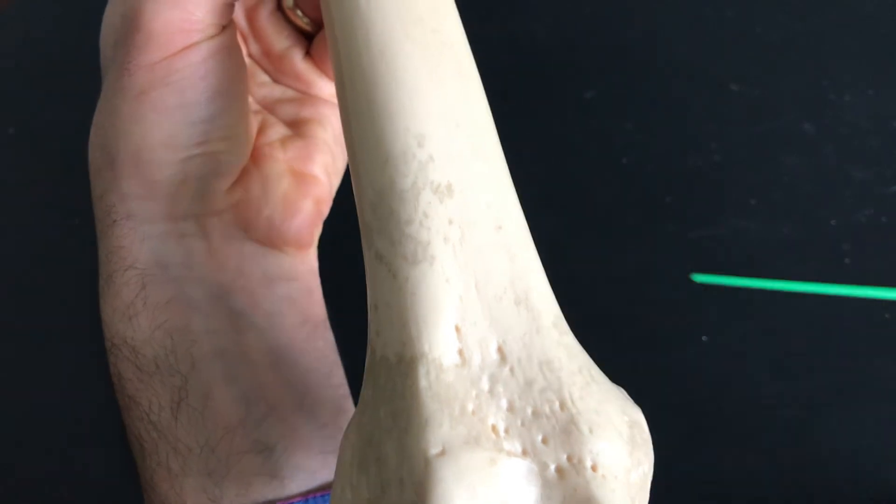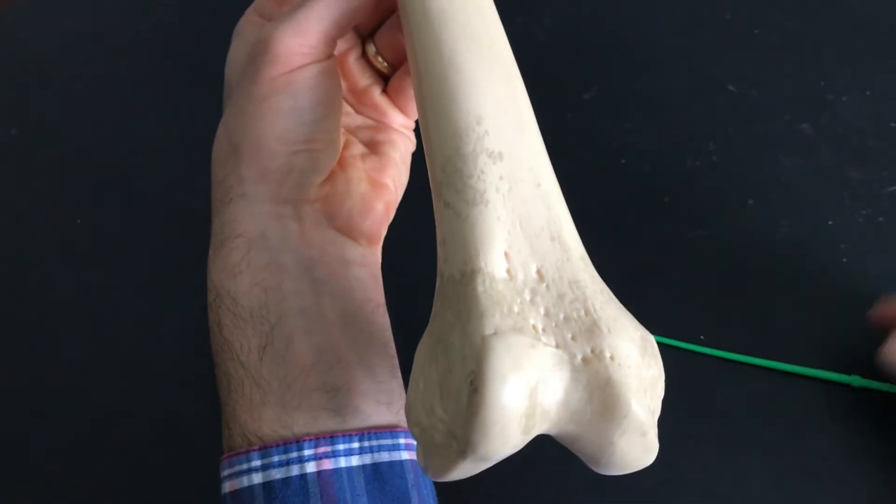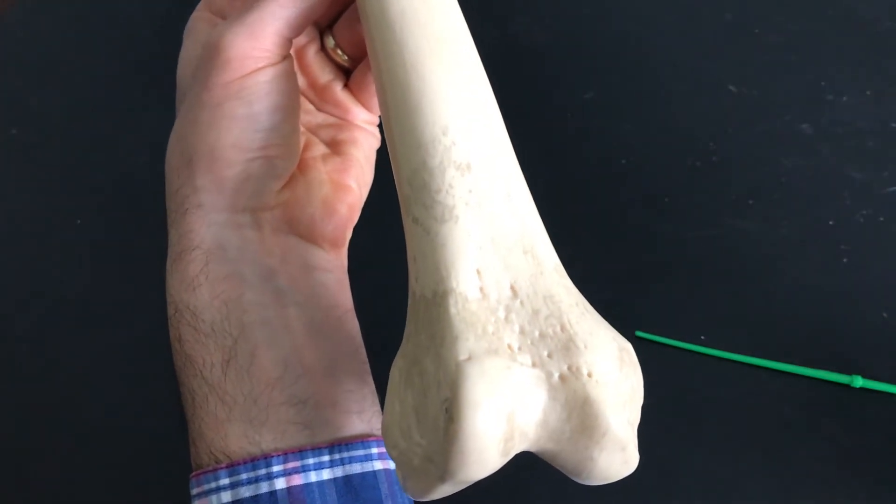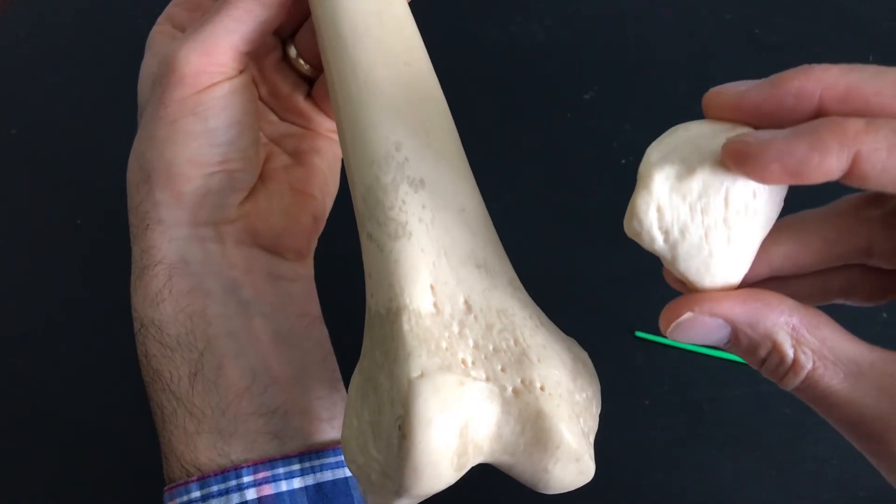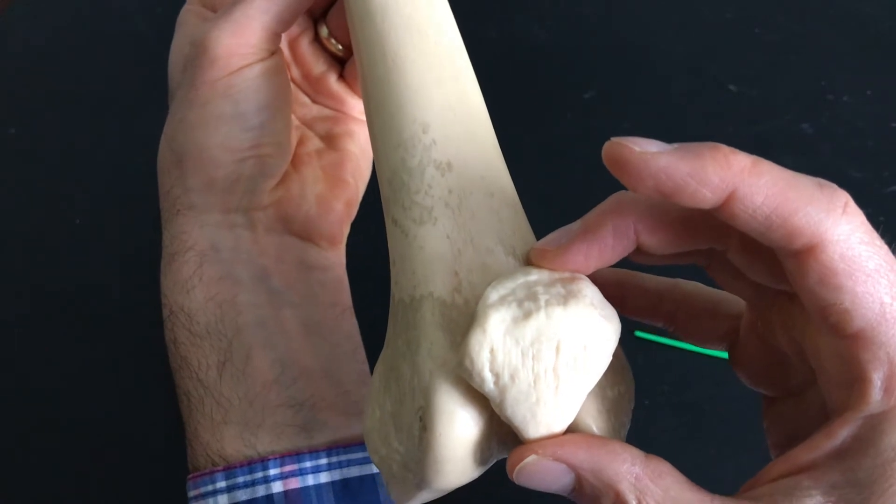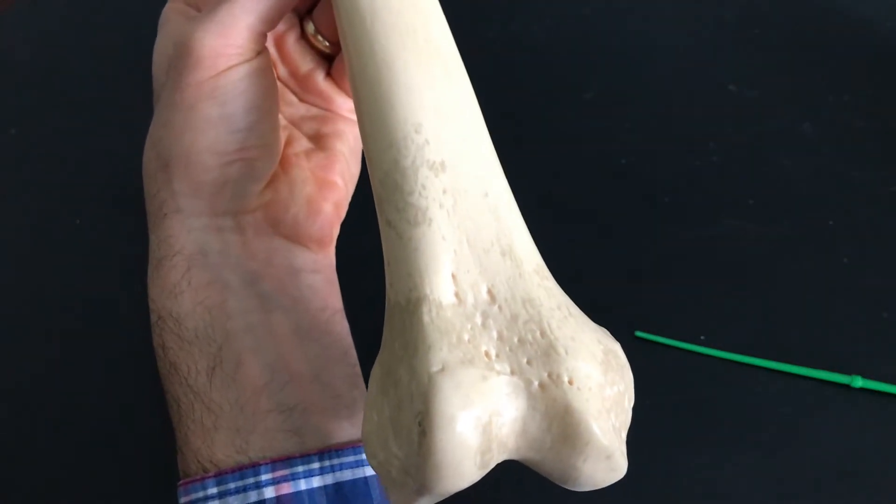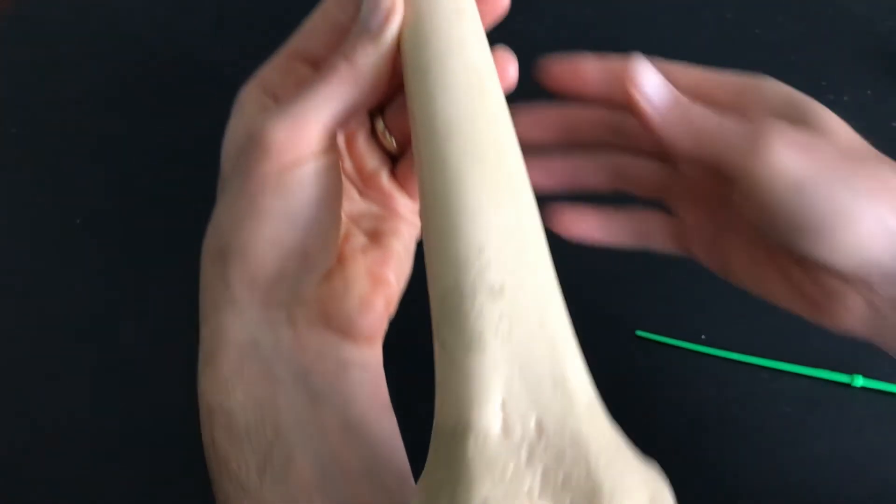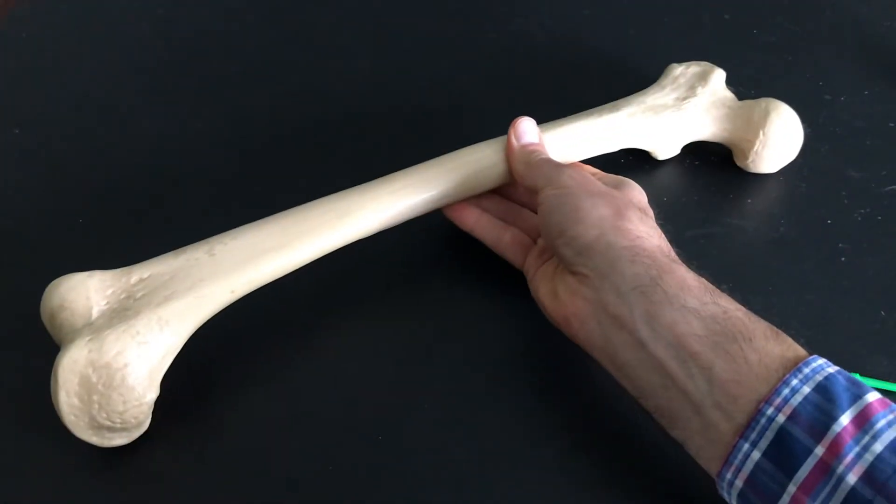This region right here is what we call the patellar surface. A little cameo by the patella. It's going to sit right here. That's our patellar surface. Your patella, of course, is your kneecap. This is an anterior view of the femur.